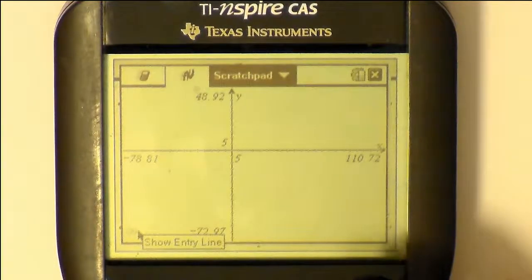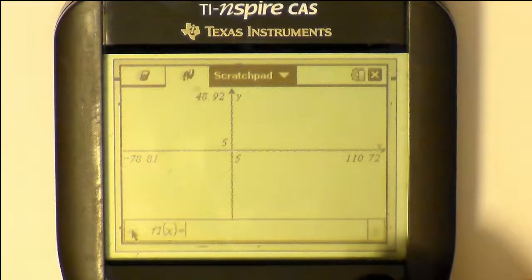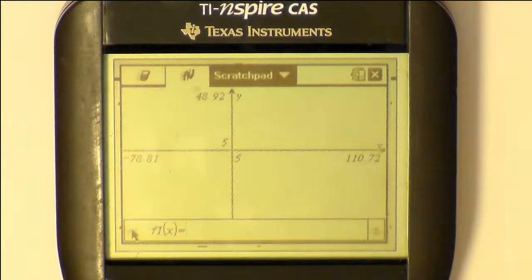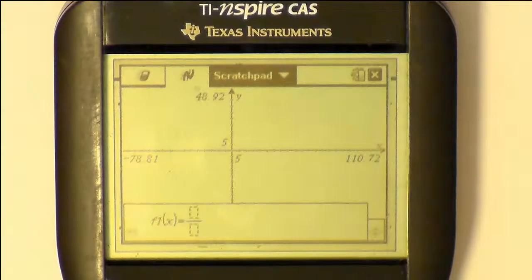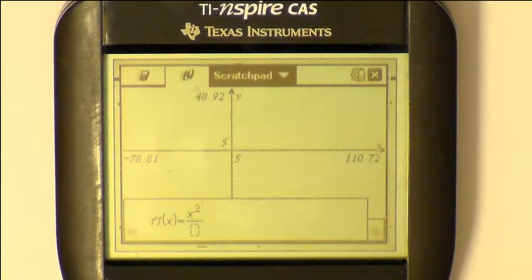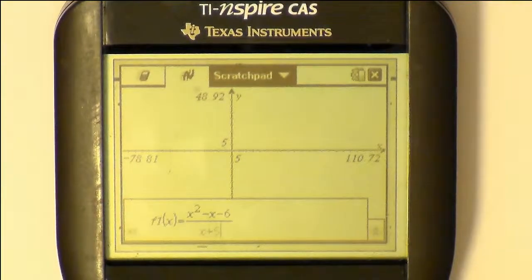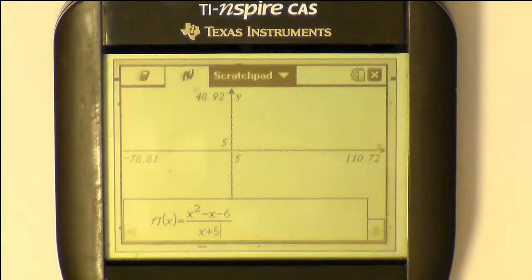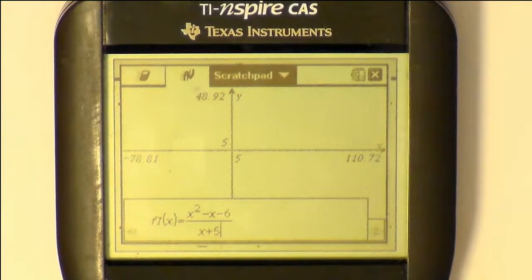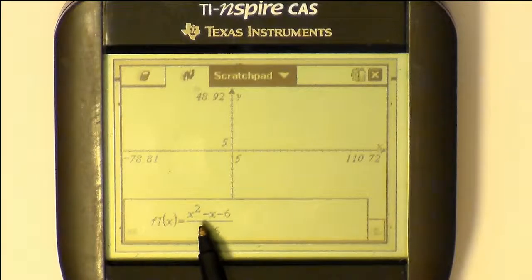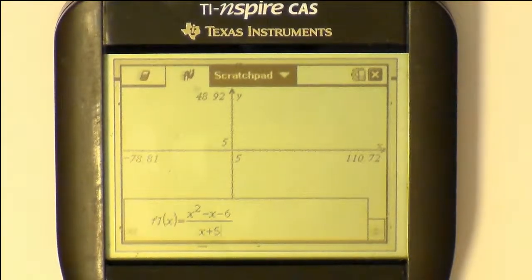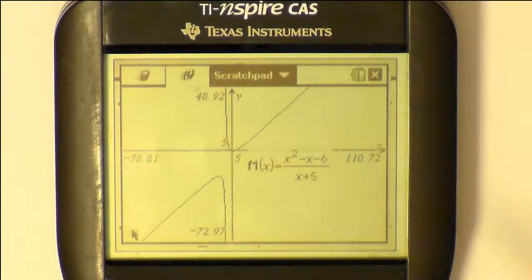And we're actually going to enter this into our graphing part of our calculator as a rational function. So we'll enter x squared minus x minus 6, and we are going to divide that by the order 1 linear polynomial, x plus 5. And so we have an order 2 polynomial divided by an order 1 polynomial. That's very important when we look at oblique asymptotes, that the order on top is 1 more than the order on the bottom.